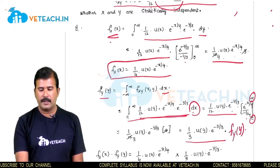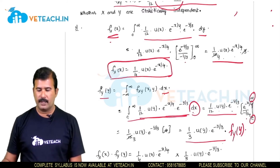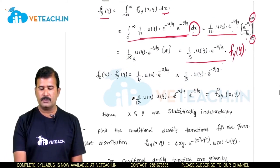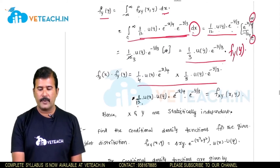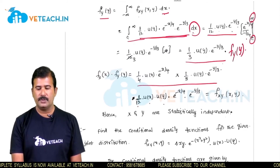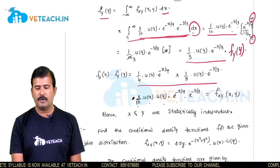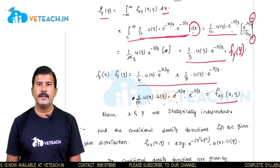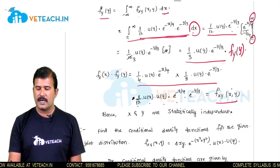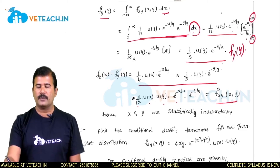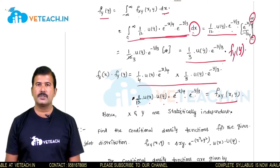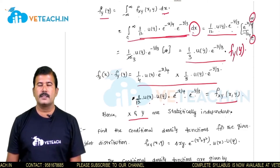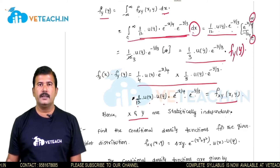We have already evaluated the marginal density function in x. Multiplying the two marginal densities gives (1/12) · u(x) · u(y) · e^(−x/4 − y/3), which is exactly the joint density function. Since the product of marginal density functions equals the joint density, x and y are statistically independent.